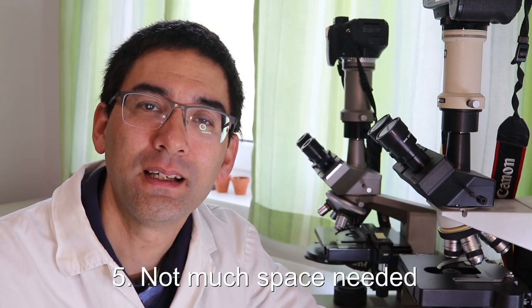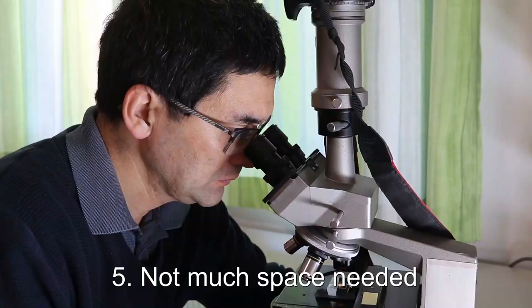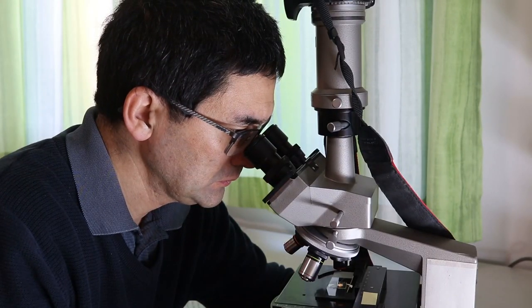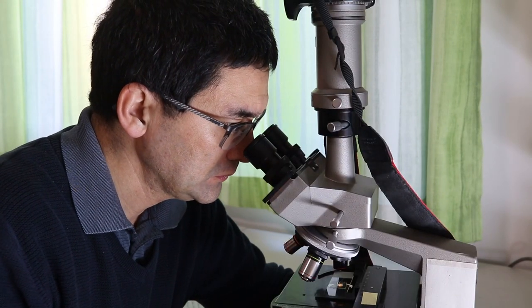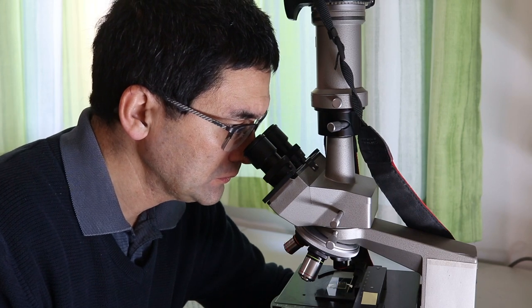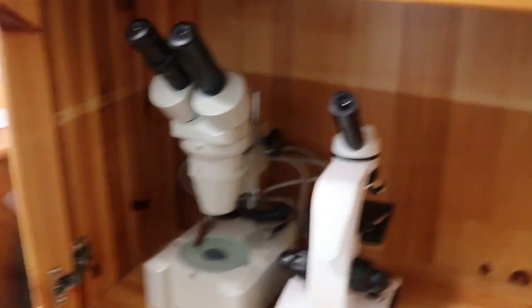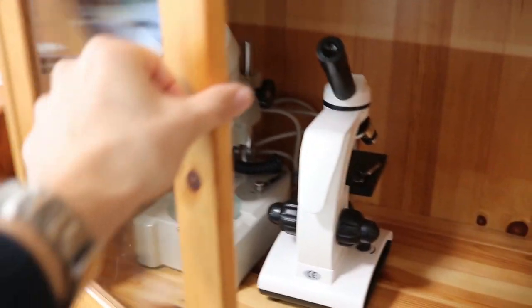Another thing: you don't need a lot of space. You basically set up your microscope on a table and you can start observing. If you do not use the microscope anymore, you just put a dust cover over it or put it into a cupboard so that it doesn't get dusty.